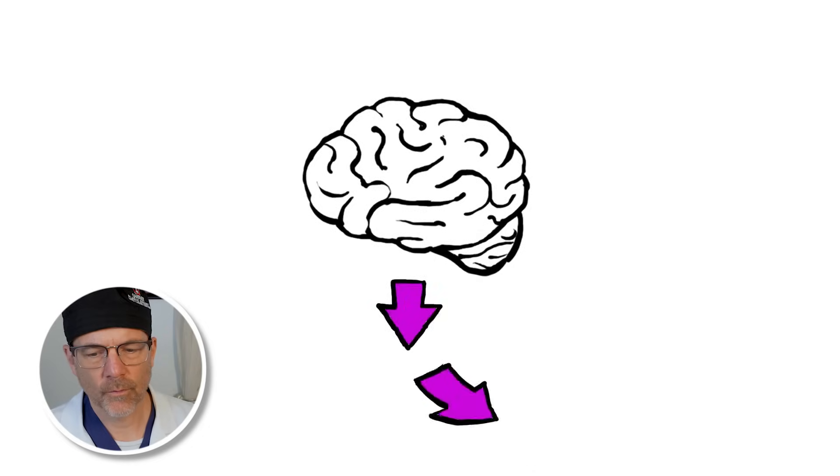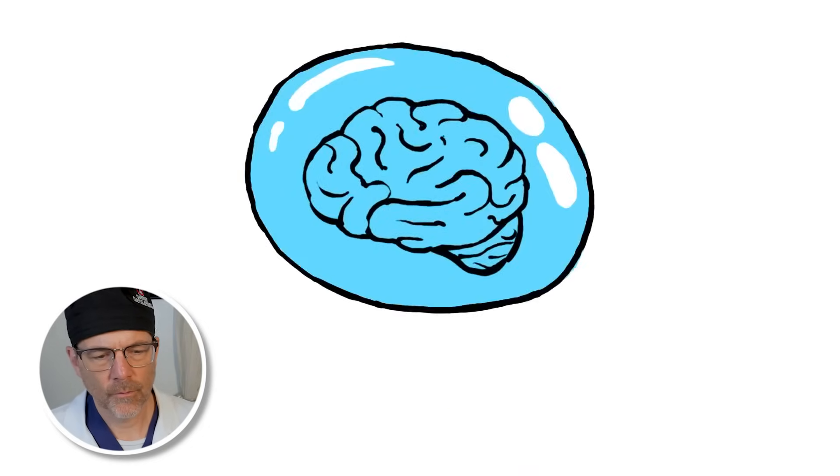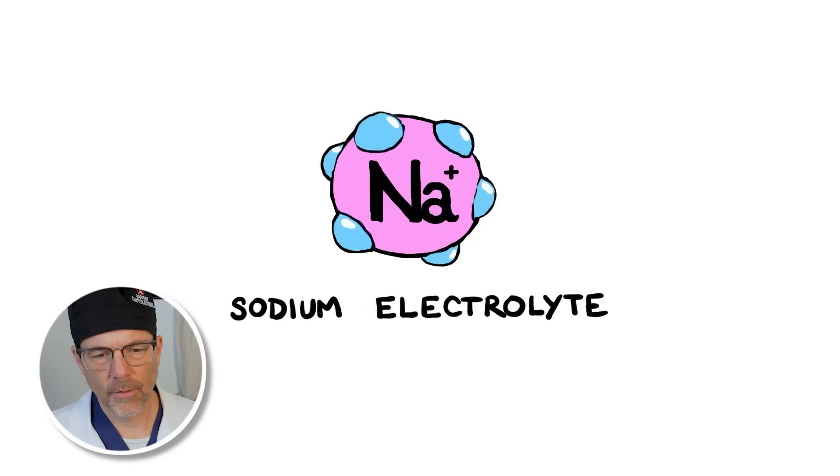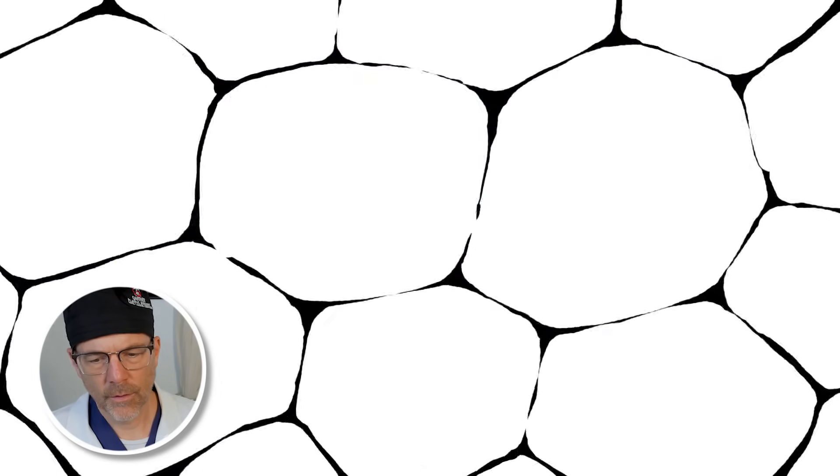Whereas the dehydrated brain amps up the production of antidiuretic hormone, the over-hydrated brain slows or even stops releasing it into the blood. Sodium electrolytes in the body become diluted, causing cells to swell.